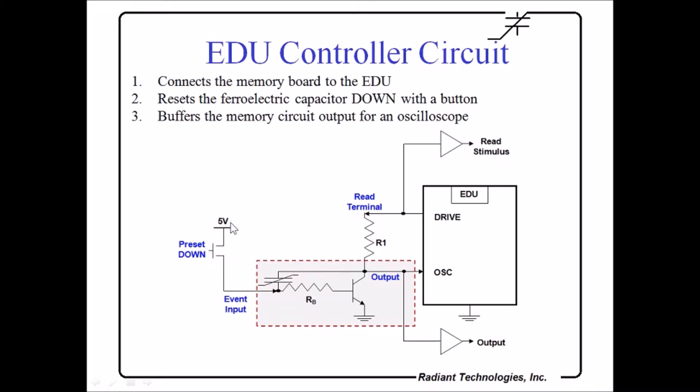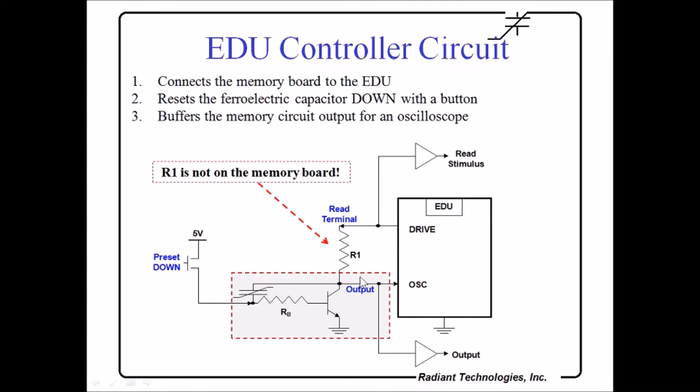On the other side, I've taken voltage from the EDU, scaled it down to five volts with a push button. Pushing the button puts five volts in this node, turns on the transistor, polarizes the capacitor down. Again, note that R1 is not on the memory board, but is on the control board. Simply by changing R1, you can change the circuit speed. Now, in this system, in this demonstration, R1 is 2200 ohms. With the 10,000 square micron PZT capacitor, the rise time takes about a millisecond and a half to saturate. You can make it faster by dropping this to a kilo-ohm or slower by raising it to five kilo-ohms or 10 kilo-ohms.